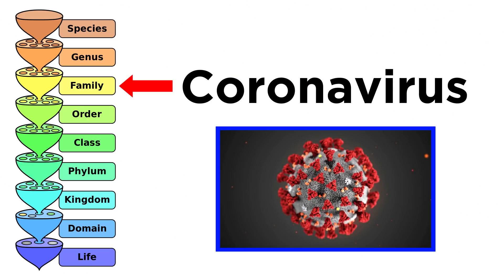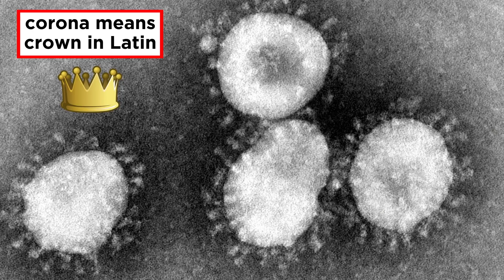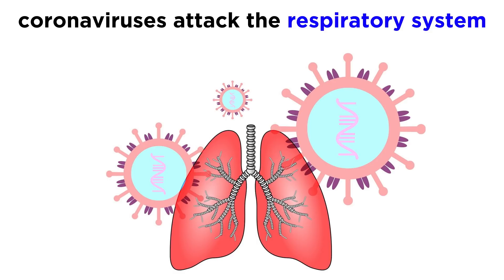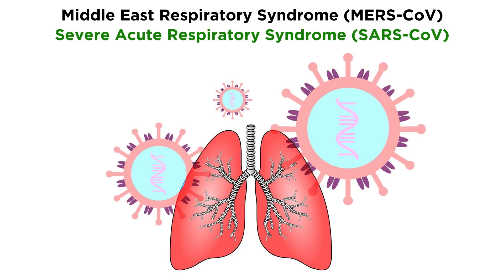Coronavirus is actually a family of viruses. Even though viruses are technically not living organisms, we still apply the convention of Linnaean classification just for simplicity. The name coronavirus comes from the Latin word corona, which means crown, referring to proteins that project from the capsid and give it a crown-like appearance. Coronaviruses attack the respiratory system, infecting cells in various tissues, replicating and disrupting normal cellular activity. They can cause diseases like Middle East Respiratory Syndrome and Severe Acute Respiratory Syndrome — the SARS that we are familiar with.